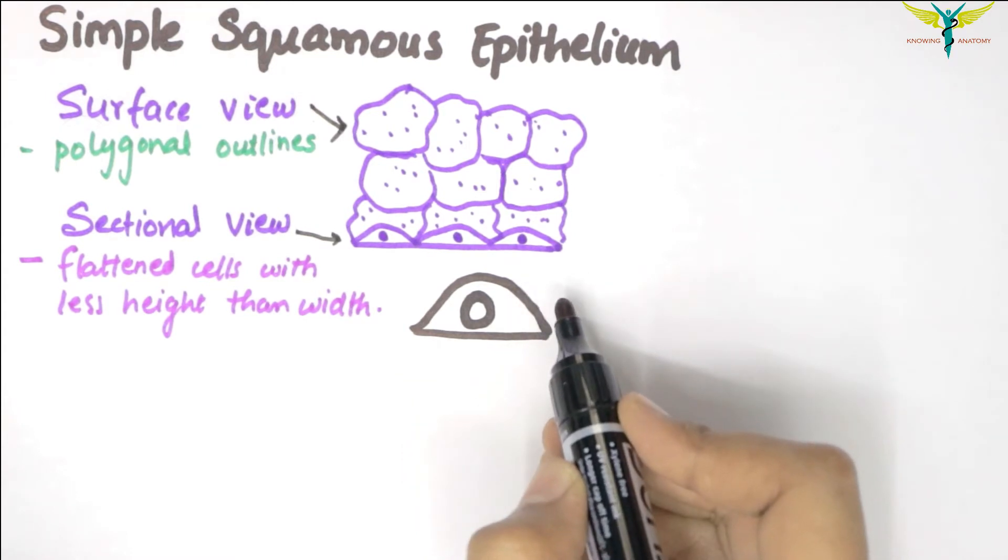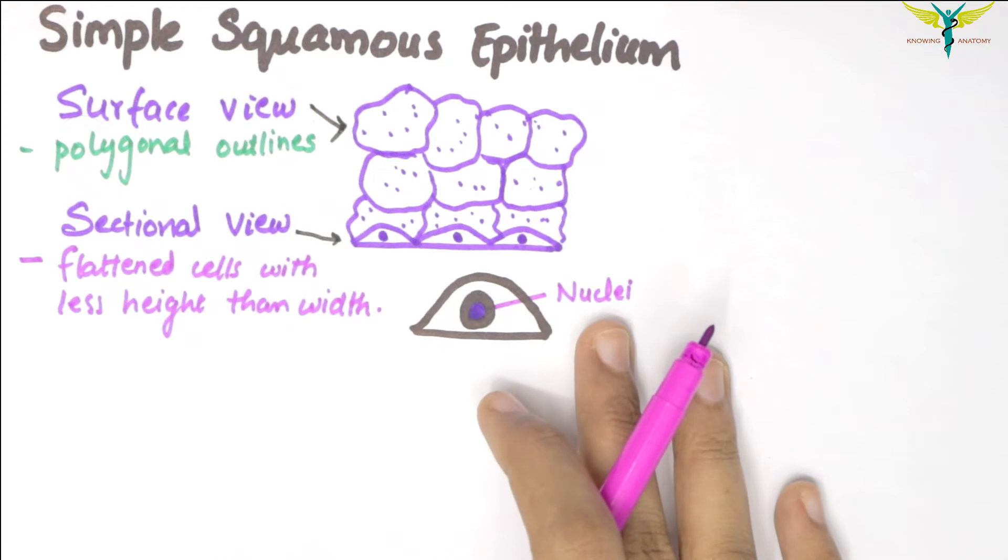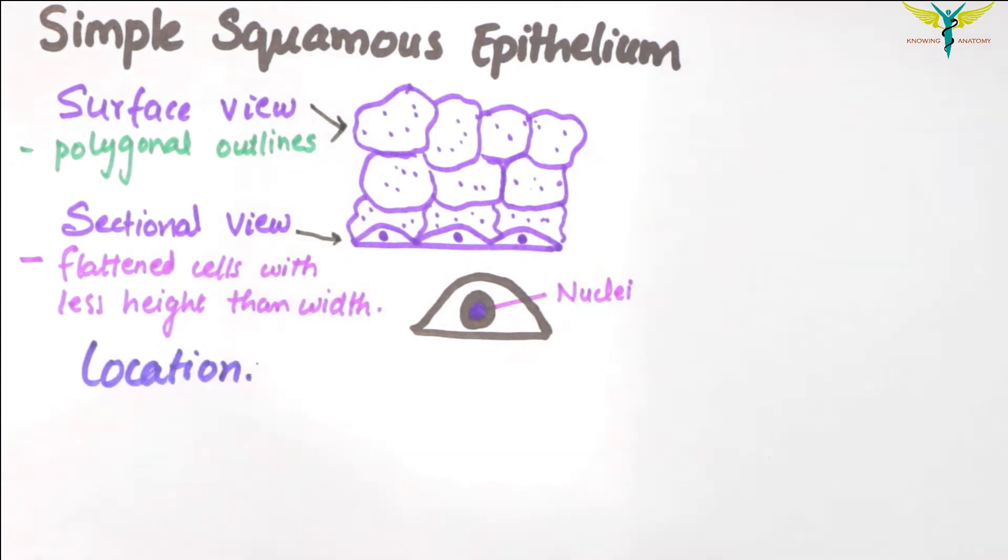The cytoplasm forms a very thin membrane. Now let's talk about the location of the simple squamous epithelium.